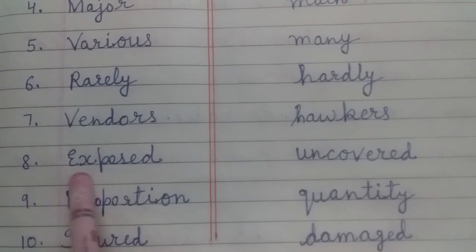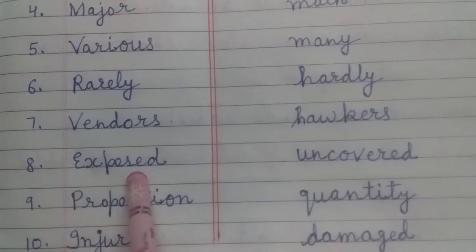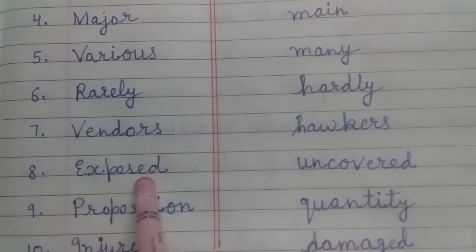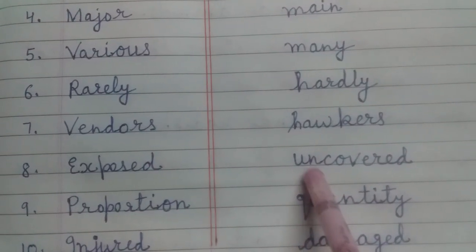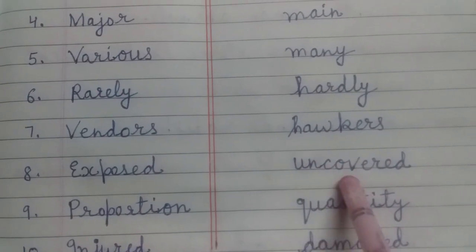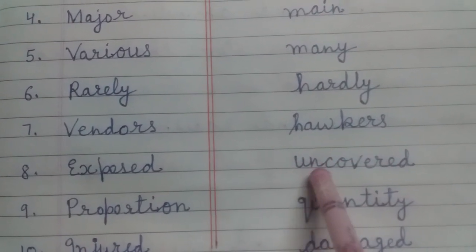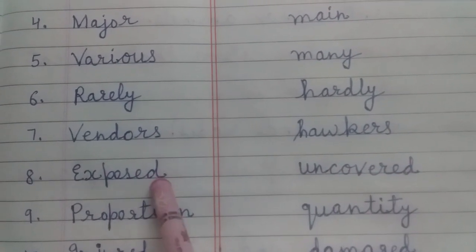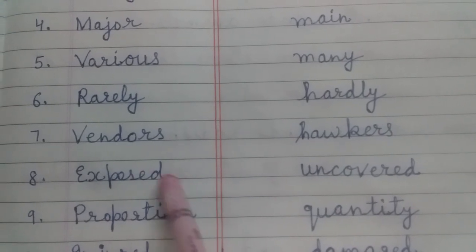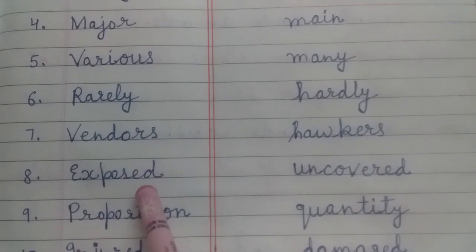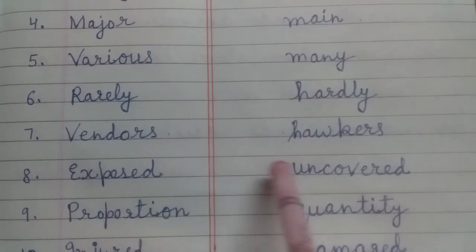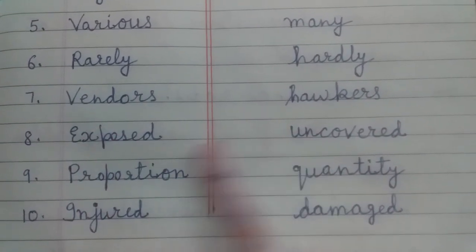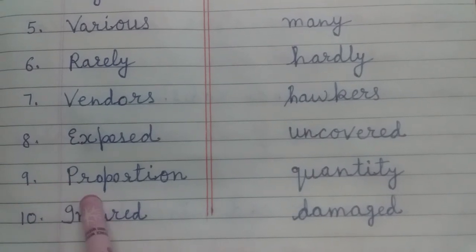Let's read our eighth word: exposed — E-X-P-O-S-E-D — exposed. Eighth word क्या है हमारा? Exposed. Meaning: uncovered — U-N-C-O-V-E-R-E-D — uncovered. जो ढका हुआ न हो। Exposed means uncovered. बिना ढके हुए अगर आप exposed food खाते हो तो उस पे dust पड़ जाती है।